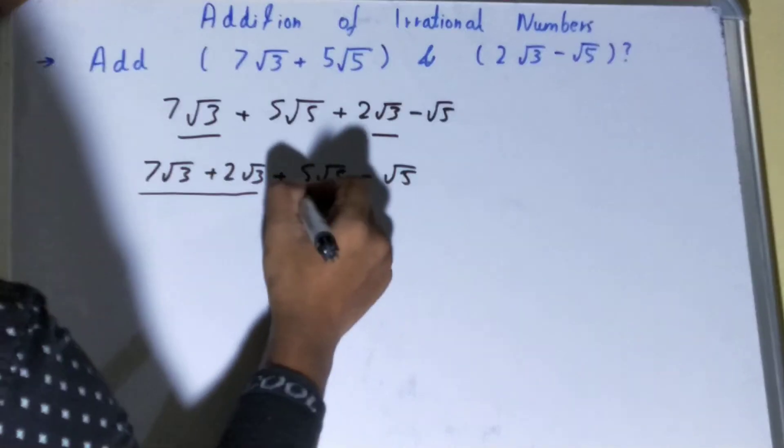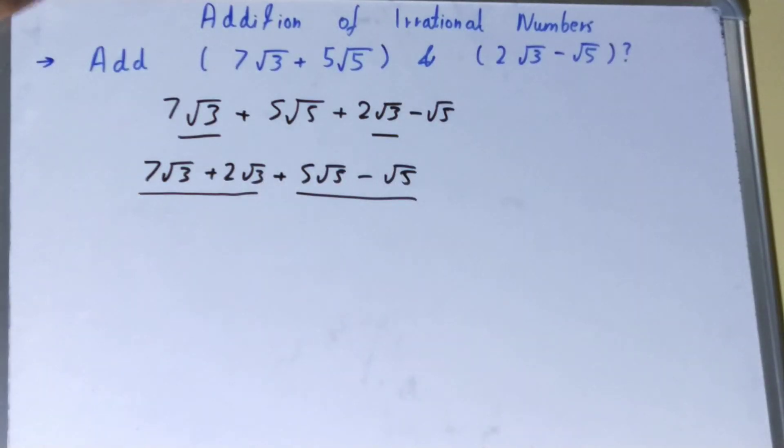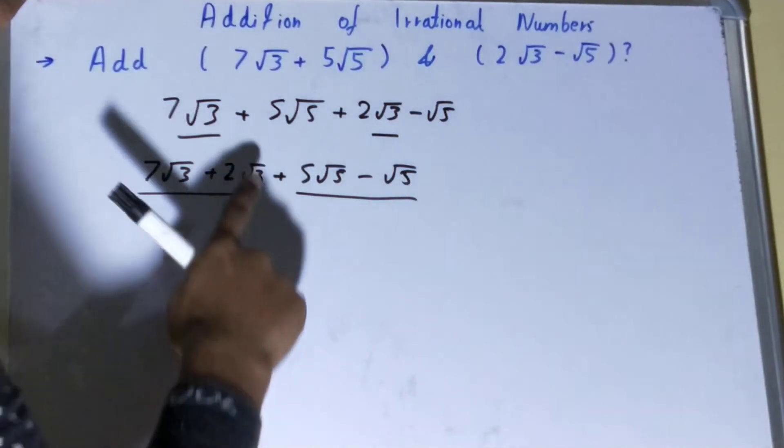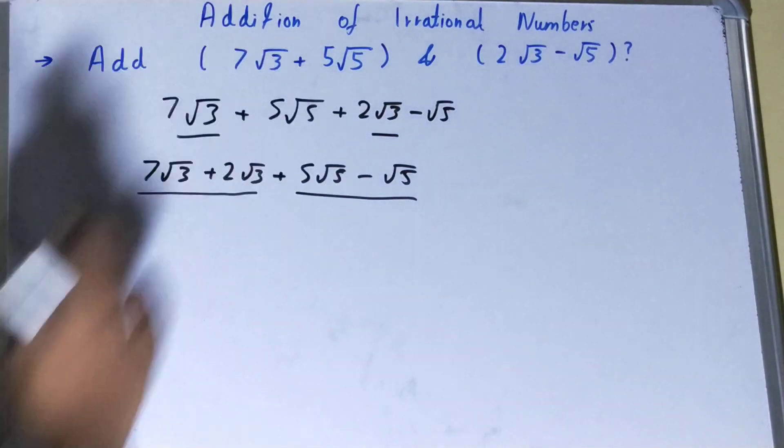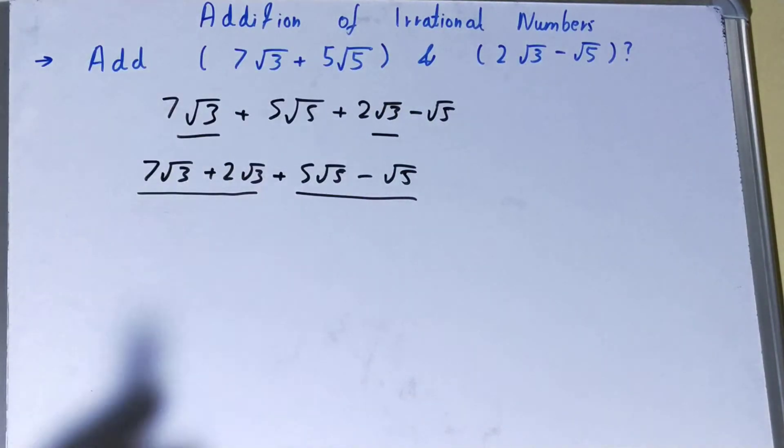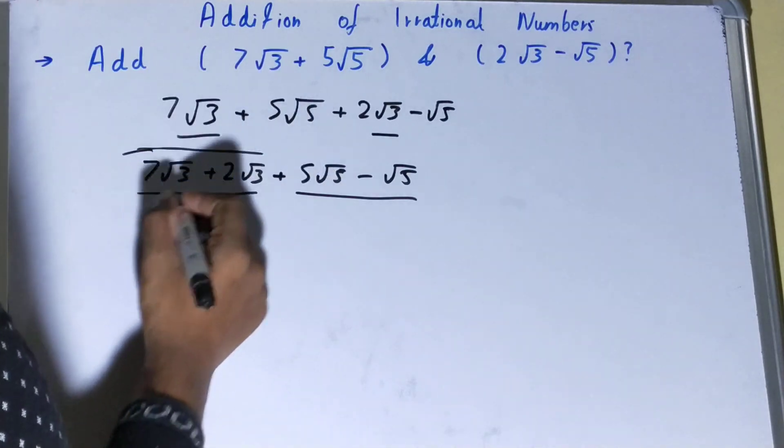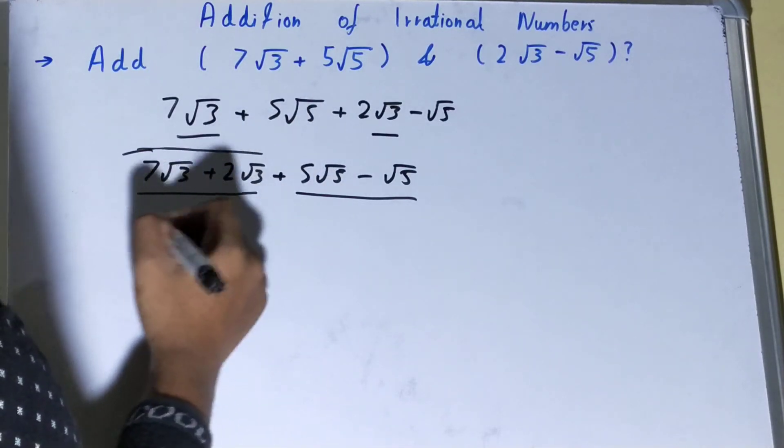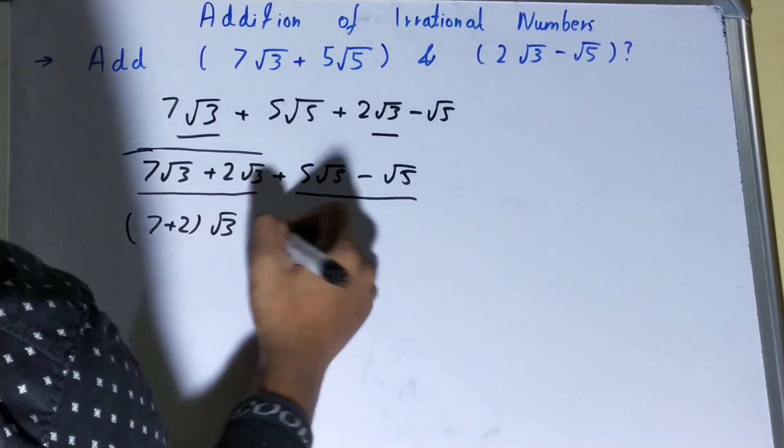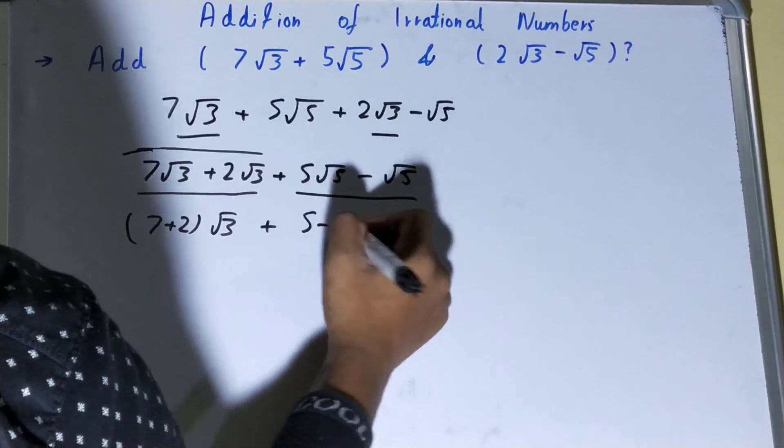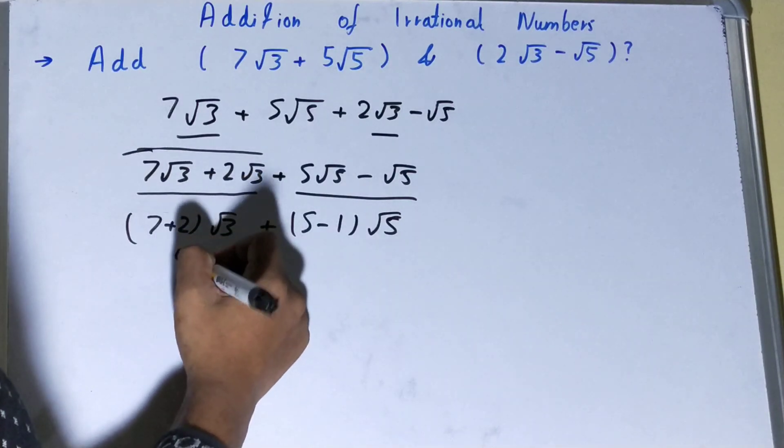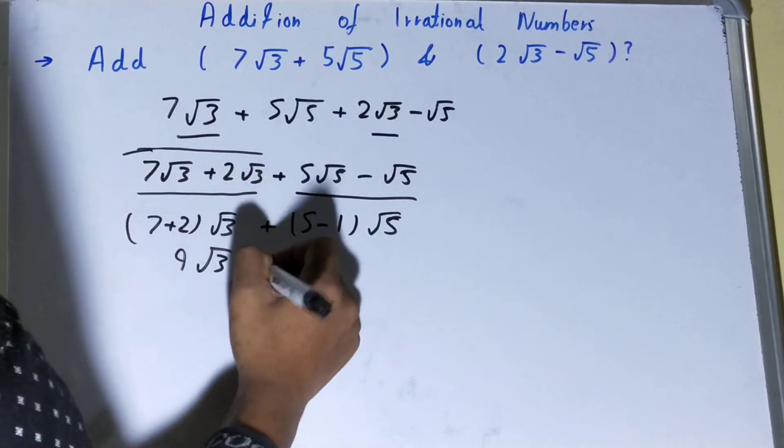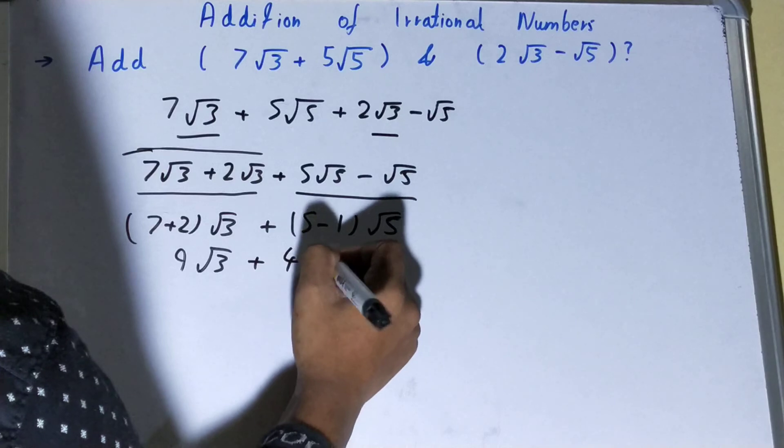Now for this group and for this group you can do the addition, but you can't add or subtract the different roots. That is, you can't add √3 with √5, that is not possible. But common root numbers can be added, so it can be (7+2)√3 plus (5-1)√5. All right, so you'll get it as 9√3 + 4√5, and that